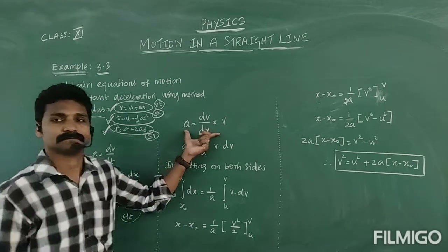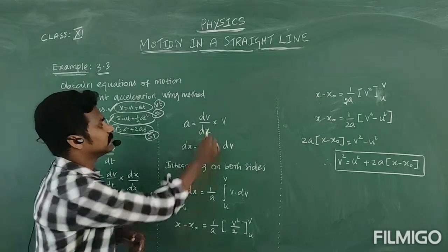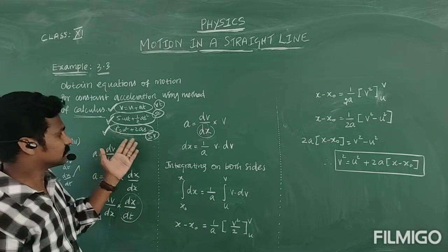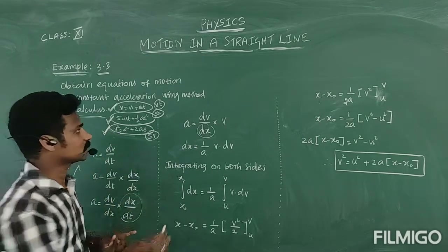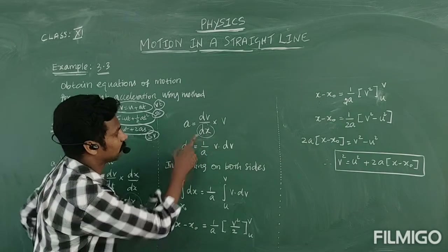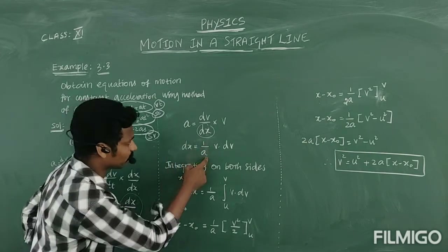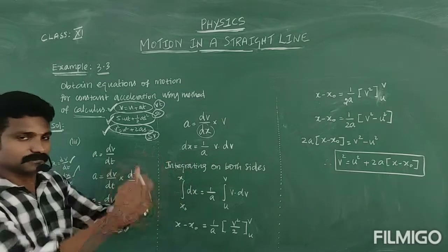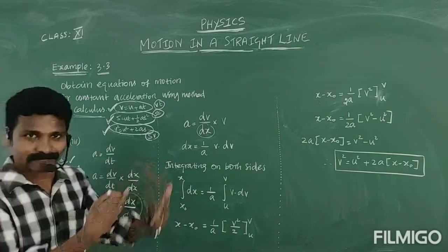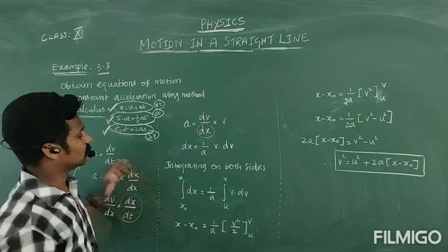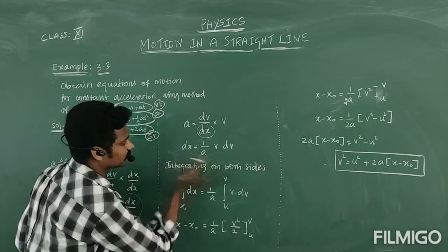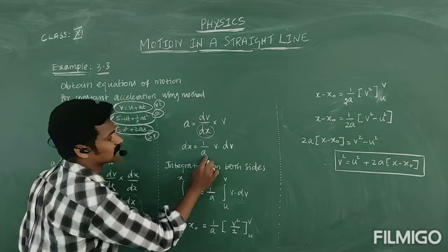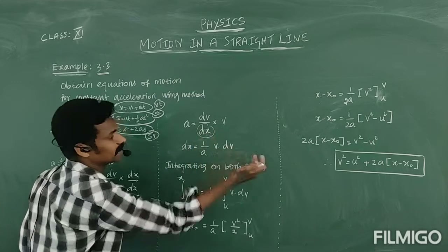That is the key step. Therefore, from this relationship between velocity and position, we can write: A·DX equals V·DV. Integrating both sides — with the left side having limits X₀ to X for position, and the right side having limits U to V for velocity.